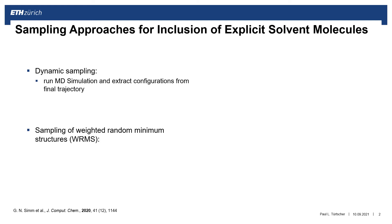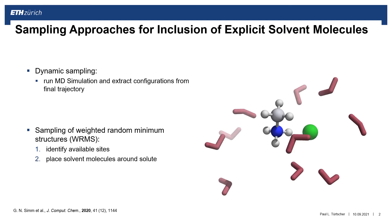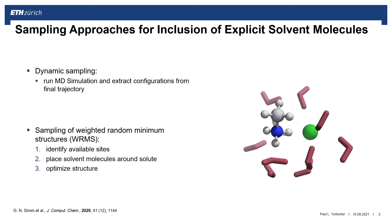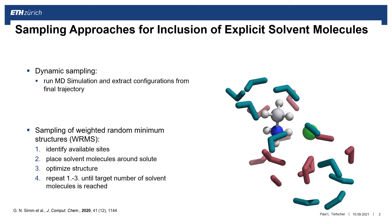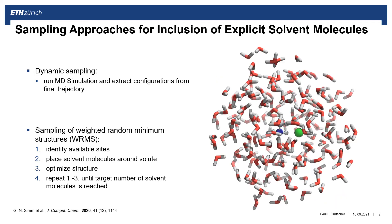The random minimum structures are obtained with the following algorithm. One identifies accessible surface sites of the solute, adds a certain number of solvent molecules, and optimizes the resulting structure. These three steps are repeated until the targeted number of solvent molecules is reached. In the shown example, a total of 180 water molecules have been added.